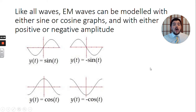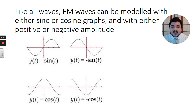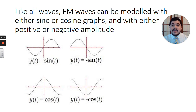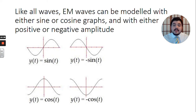Like all waves, electromagnetic waves can be modeled with either sine or cosine graphs, and with either positive or negative amplitudes. So here we see the parent functions for y = sin(T), and negative sine of T on the top. On the bottom, we have y = cos(T) and negative cosine of T. Your electric field versus time or electric field versus position graphs may take on any one of these four forms — it just depends on when you started collecting data. For our class, we'll stick with these four.